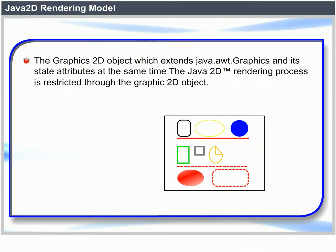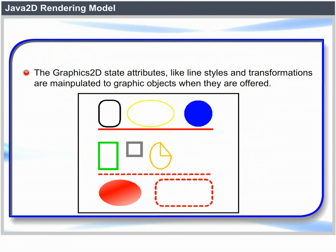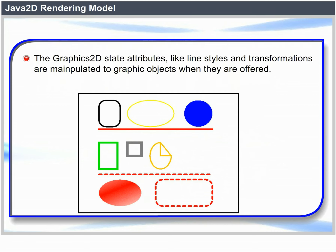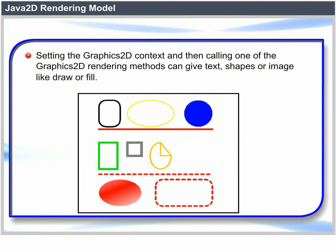Java 2D rendering model: The Graphics2D object extends java.awt.Graphics and its state attributes. The Java 2D rendering process is controlled through the Graphics2D object. State attributes like line styles and transformations are applied to Graphics objects when they are used. Setting the Graphics2D context and then calling one of the Graphics2D rendering methods can produce text,